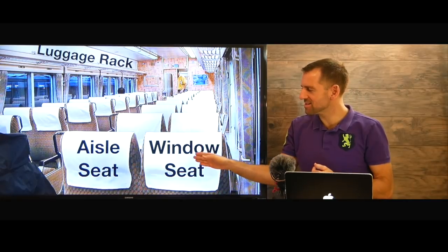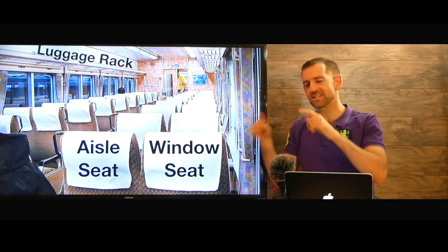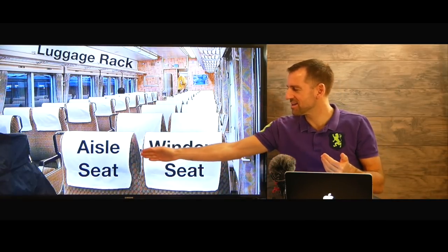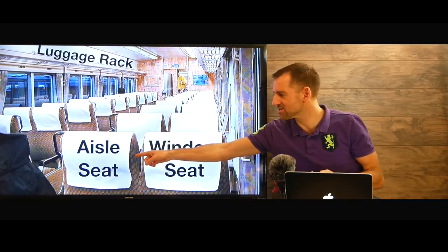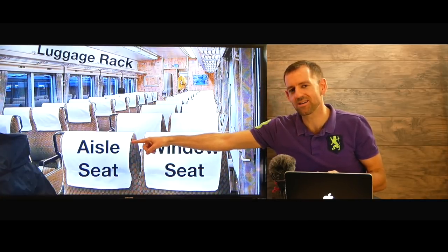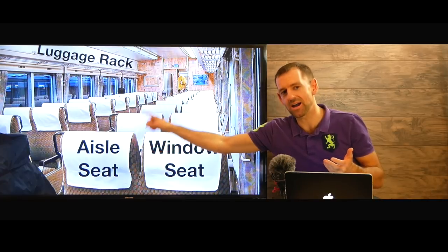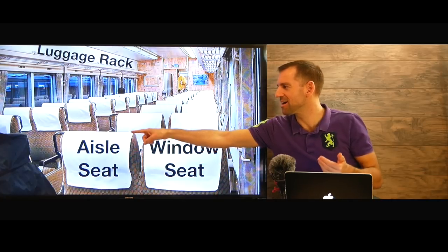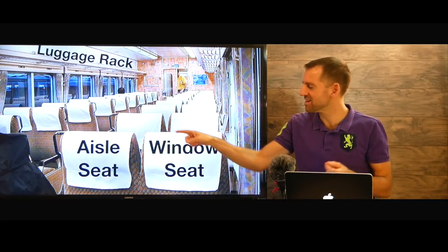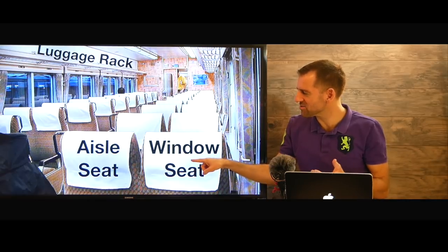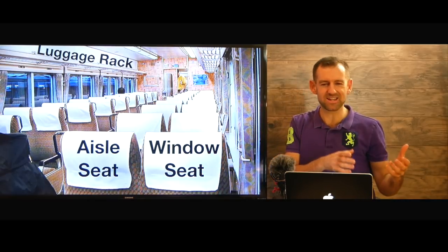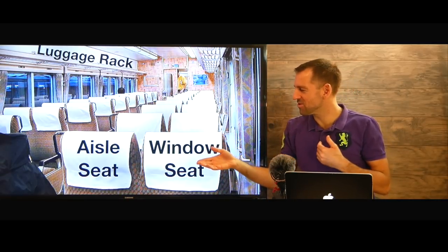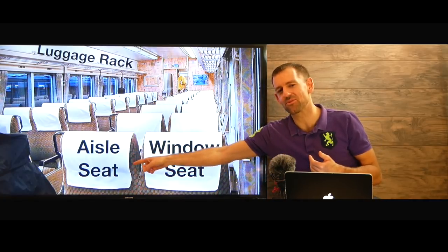There are window seats and aisle seats. If you want to sit beside a window, then you need a window seat. If you want to sit beside an aisle, then you need an aisle seat. The thing in the middle where you walk is called the aisle. Sometimes it's better to have an aisle seat, because then you can get up and go to the bathroom. If you're sitting in the window seat, you need to bother the person sitting next to you — you need to say, 'Excuse me, I need to get up and use the bathroom.' So I think sometimes I prefer the aisle seat.